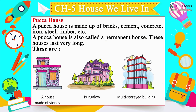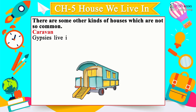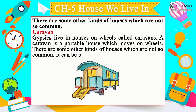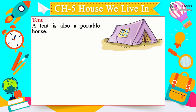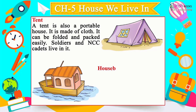Other kinds of houses: Bungalow and multi-storey buildings are common permanent structures. Gypsies live in caravans — portable houses on wheels that can be parked anywhere. A tent is a portable house made of cloth that can be folded and packed easily; soldiers and NCC cadets live in tents.